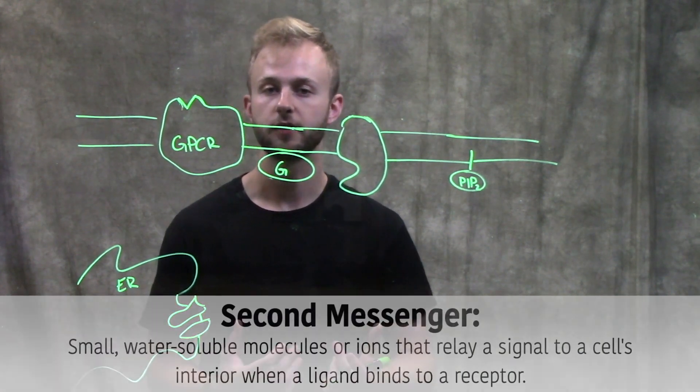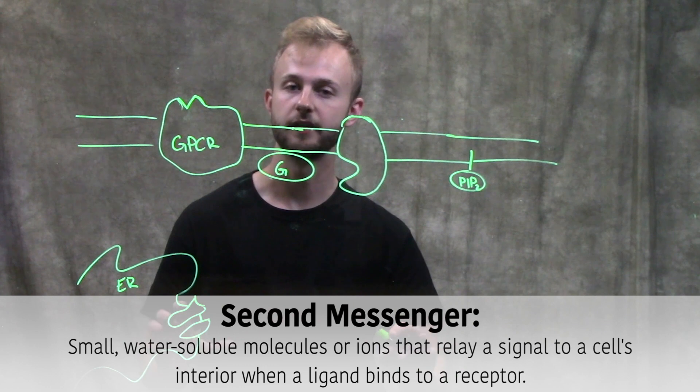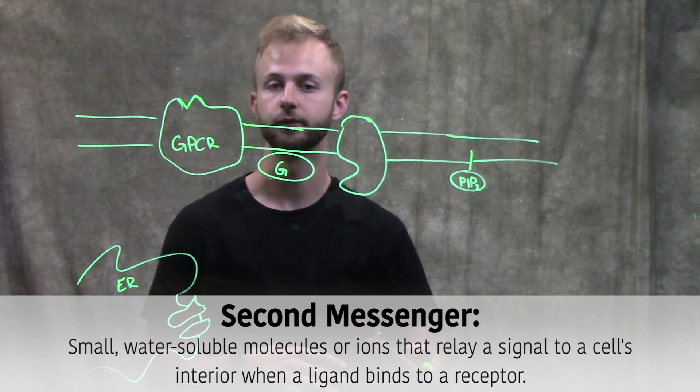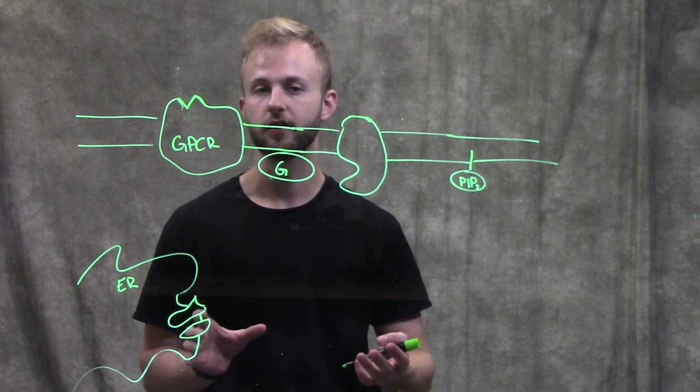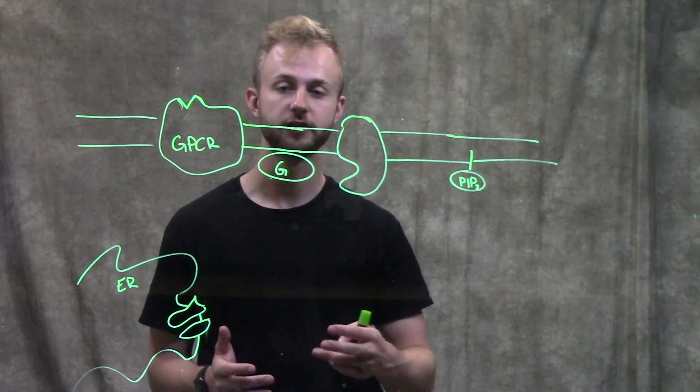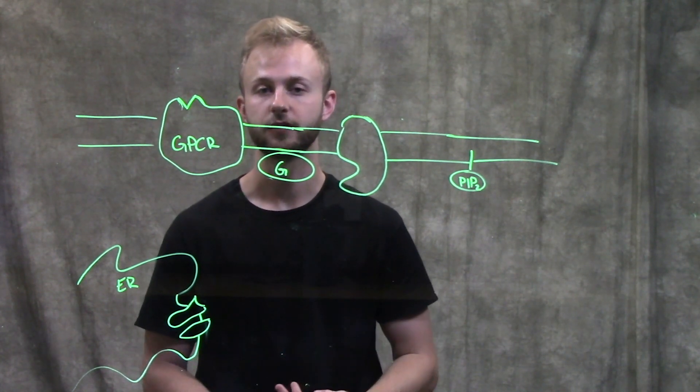Second messengers are going to be water-soluble molecules that can diffuse through the cytoplasm and actually elicit a cellular response. Two really common second messengers are going to be cyclic AMP or cAMP and calcium ions.